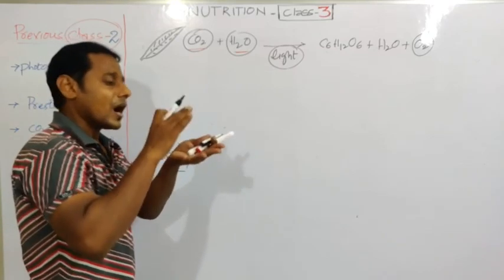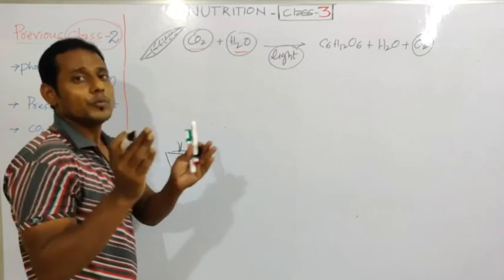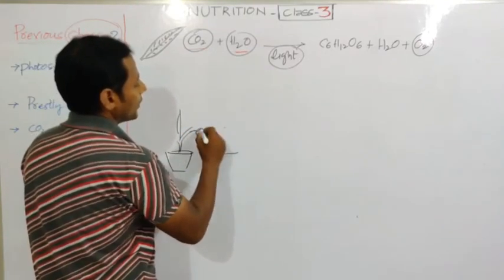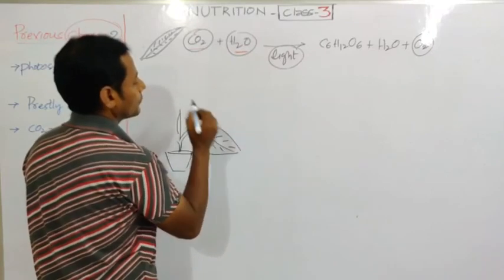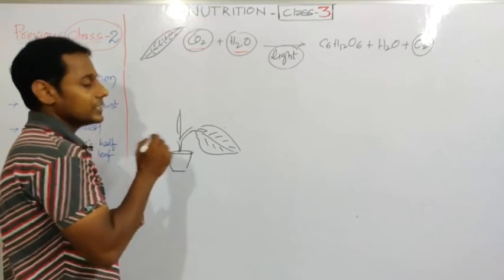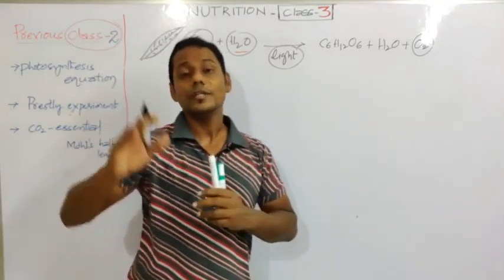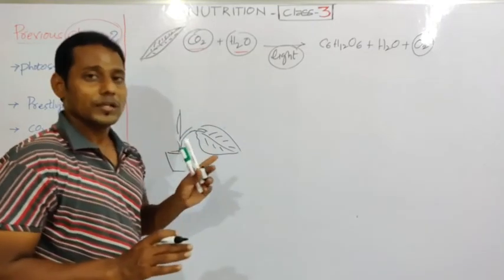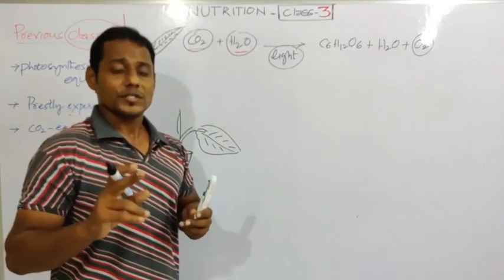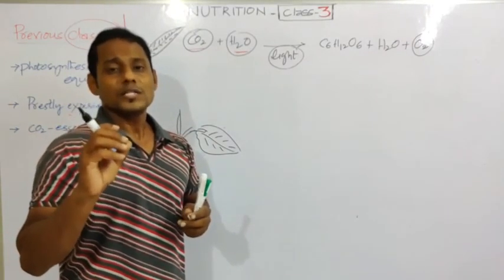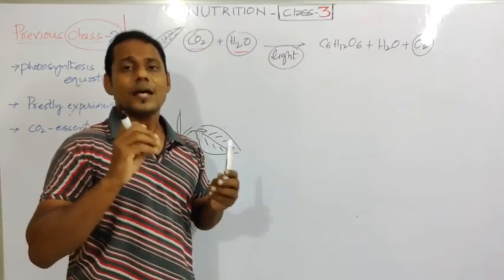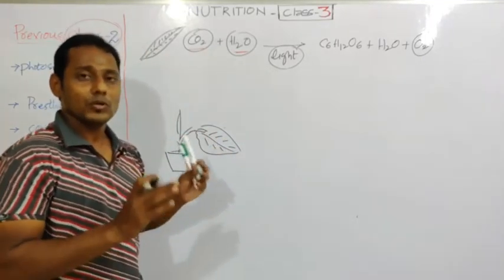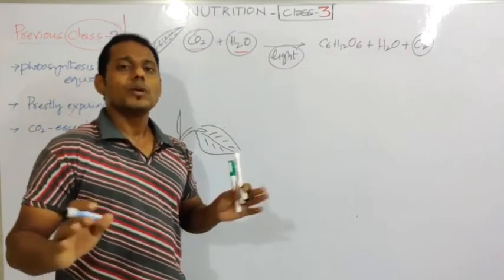The leaves should be wider. We take this potter plant and the leaves should be well spread out and healthy. We are going to destarch the leaves in this experiment too. As in the previous class for the carbon dioxide experiment, we destarch all the leaves - just by keeping that plant in the dark room for two to three days. In the same way here, we keep the plant in a dark room for two to three days to destarch all the leaves.